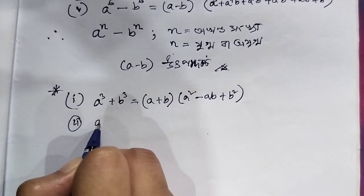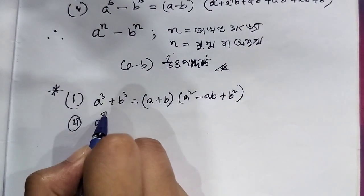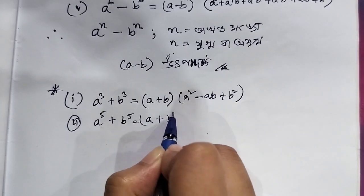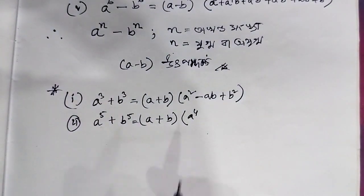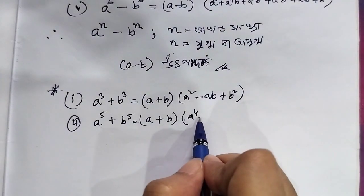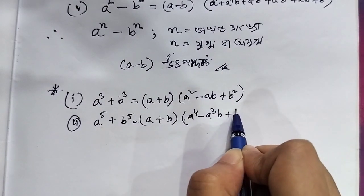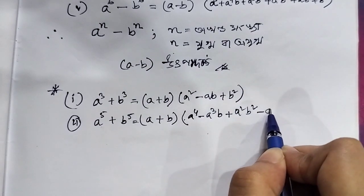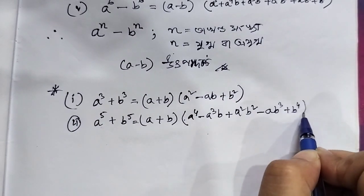a to the power 4 plus b to the power 4 — we cannot factor this using a plus b. But from b to the power 5 with a plus b, looking at a to the power 4: the signs alternate plus, minus, plus, minus. So: a cube b minus, then plus a square b square, then minus ab to the power 3, then plus b to the power 4.